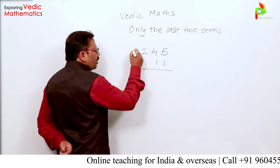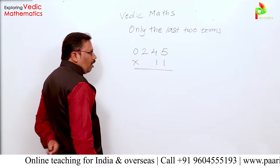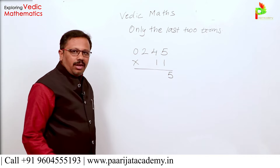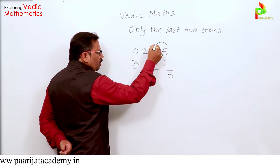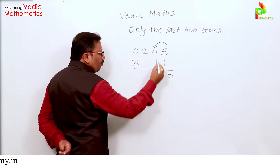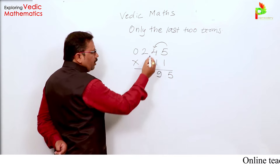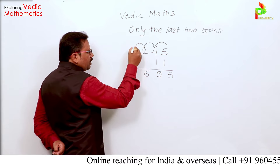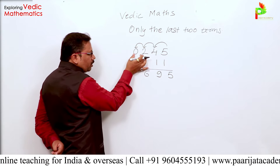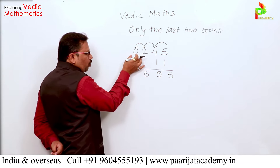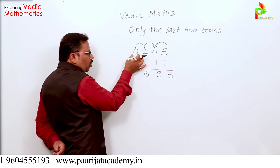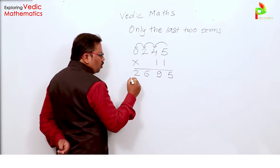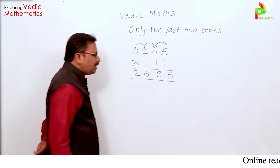What I will do here: I prefix a 0 to the number. Then I write down the last digit, 5, in the units place as it is. Next, I add 5 plus 4 to get 9. Then 4 plus 2 is 6. Then 2 plus 0 is 2 — because I prefixed 0, applying the 'last two terms' rule. So our answer is 2695.